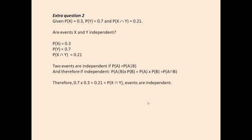It's like a special case of the multiplication rule, and that gives us a way to check for X and Y. We multiply the two marginal probabilities together, and if they equal the joint probability of X and Y, we know they're independent. The probability of X times the probability of Y: 0.7 times 0.3 gives us 0.21 — exactly the same as the joint probability. So therefore, they must be independent. That will only be true if X and Y are independent.